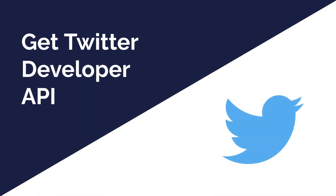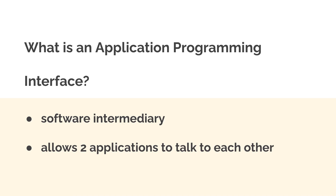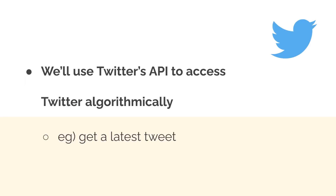Hello everyone and welcome back to our course. In this lecture, we are going to talk about how to get the Twitter developer API — how you can access the API — because we're going to need it for our project. First, let's talk about what an API is. API stands for application programming interface. It's a software intermediary, a third-party middleman, and it allows two applications to talk to each other. In our case, it's going to allow our bot to talk to Twitter. We'll use Twitter's API to access Twitter algorithmically via our code — for example, to get the latest tweet from a celebrity.